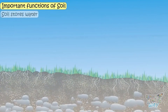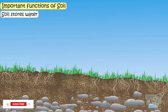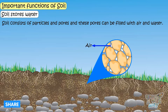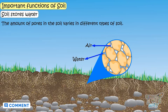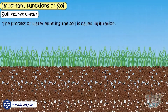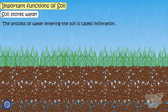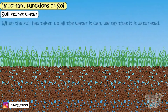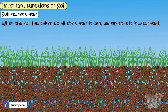Soil stores water. Soils consist of particles and pores, and these pores can be filled with air but also with water. The amount of pores in a soil is different for different types of soil. The process of water entering the soil is called infiltration. When the soil has taken up all the water it can, we say that it is saturated.